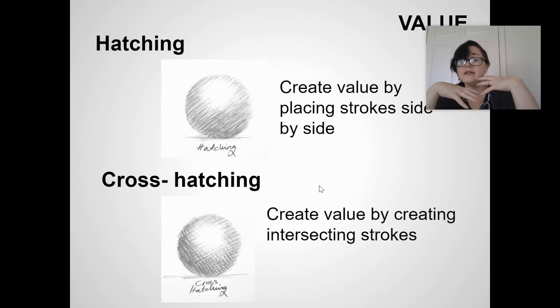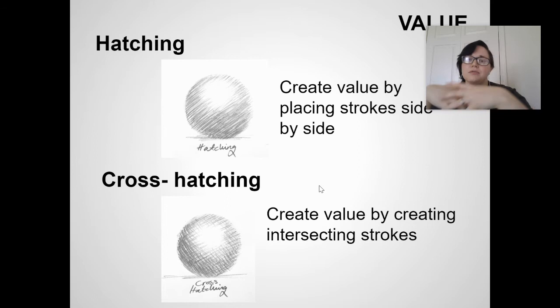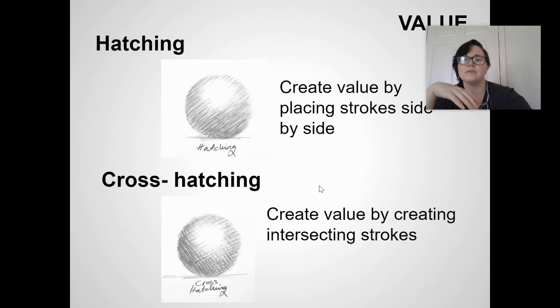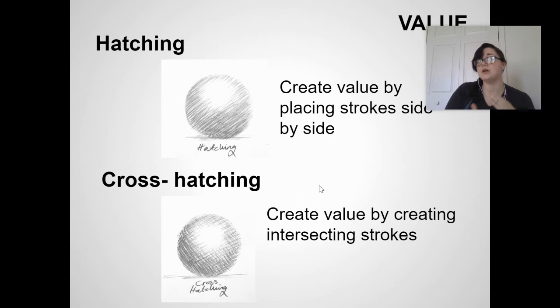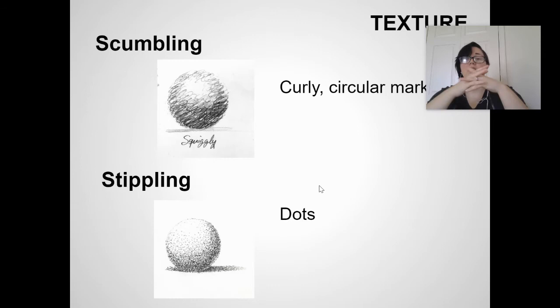There are two general strategies for creating value. First, hatching — placing strokes side by side. Notice how a sphere can look 3D by placing different stroke frequencies in different areas: lighter pressure and fewer strokes at the top, more strokes and heavier pressure at the bottom. Cross-hatching creates values using intersecting strokes that form an X or T shape. With hatching, everything goes in one direction; with cross-hatching, strokes go in opposite directions.